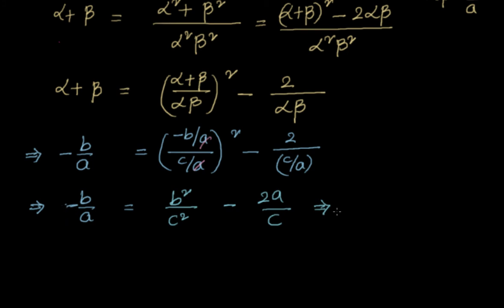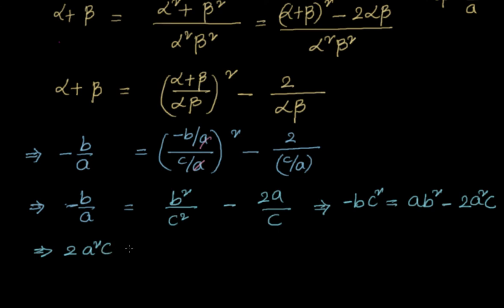Multiplying through by ac², we get: −bc² = ab² − 2a²c, which we can rearrange as 2a²c = ab² + bc².